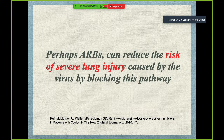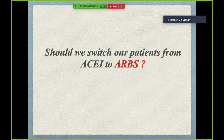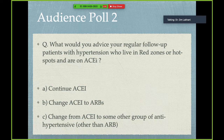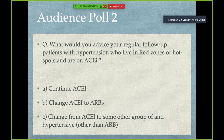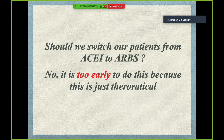We are not yet sure, but ARBs theoretically can reduce the risk of severe lung injury. Should we switch patients from ACE inhibitor to ARB? We don't have clear data yet. This is our next audience question: if your patient is in a red zone, on an ACE inhibitor, and asks about it — would you continue the ACE inhibitor, switch to ARB, or switch to another antihypertensive? It's too early to definitively switch patients, but this could be a potential option.